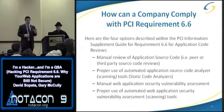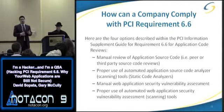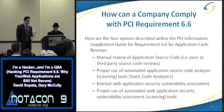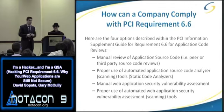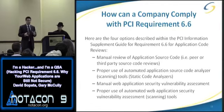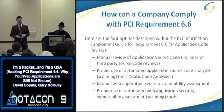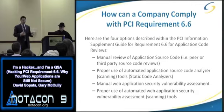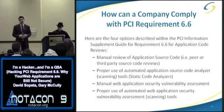How can a company comply with requirement 6.6? There are two general things you can do: a code review or a WAF. What they consider code reviews includes either a manual review of the source code, a scan-based static code analysis tool, or a web application vulnerability assessment. So you can do a manual review, or use a scanning tool like AppScan.